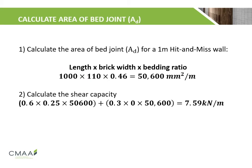Firstly, we calculate the area of bed joint for a 1 m hit-and-miss wall. This is calculated by multiplying the wall length by the brick width by the bedding ratio, which comes out to 50,600 mm² per metre. Next, we calculate the shear capacity. Shear bond is the only contributor to shear capacity, as shear friction is calculated to be 0 due to no compressive stress on the bed joint at the void. Thus, the shear capacity is calculated to be 7.59 kN per metre.